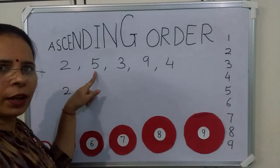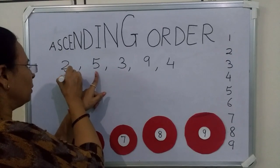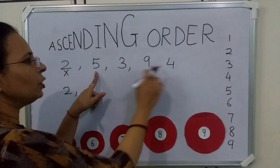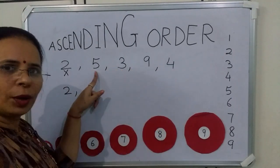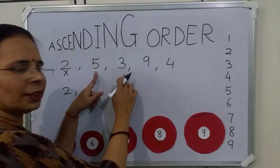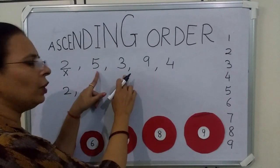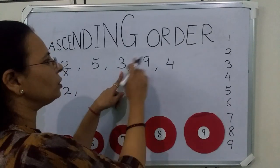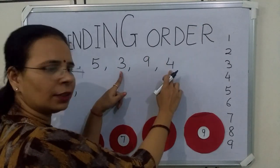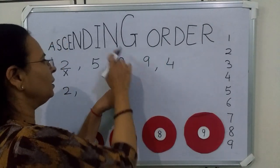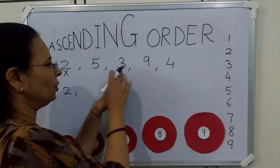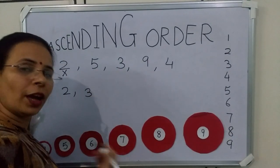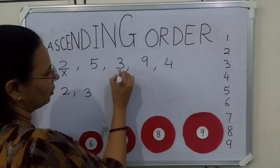Now the next number is 5, and we will cut 2. Now we have to find the smallest number from these 4 numbers. Is 5 smaller than 3? No, so we will skip 5. Now we have to see 3. Is 3 smaller than 9? Yes. Is 3 smaller than 4? Yes. And 3 is also smaller than 5. So we will write 3, and we will cut it.